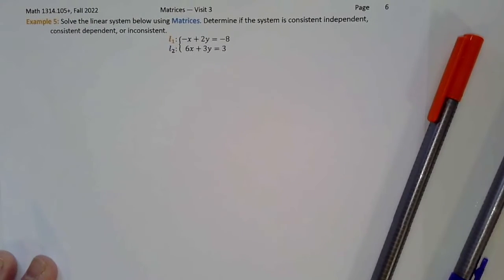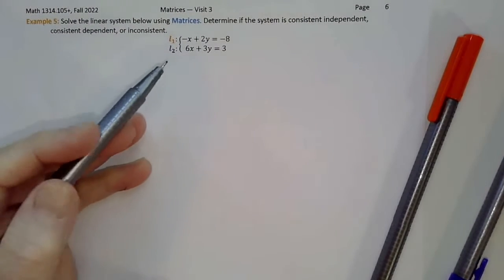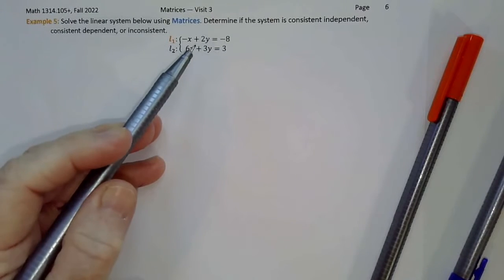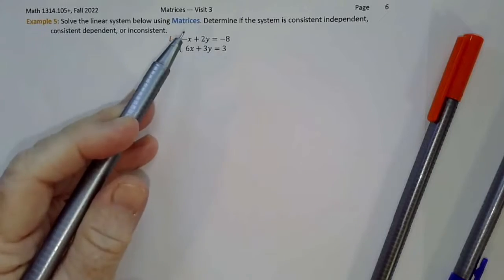In this video, we're going to solve the system negative x plus 2y equals negative 8 and 6x plus 3y equals 3 using matrices.